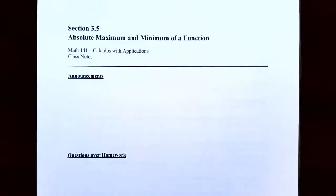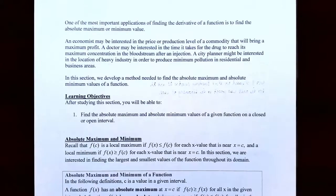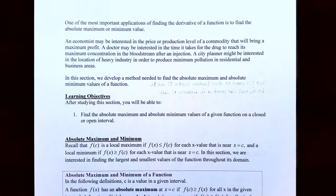Hi everyone, it's Professor Primton. In this video we're going to talk about how to find the absolute maximum and minimum of a function on an open interval. In the previous video we talked about how to find the absolute maximum and minimum using the extreme value theorem on a closed interval, because on a closed interval we know that we have an absolute maximum and absolute minimum value guaranteed. In this video we're going to talk about finding the absolute maximum and absolute minimum on an open interval.